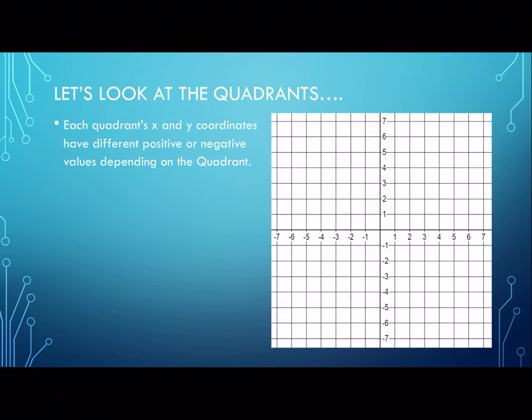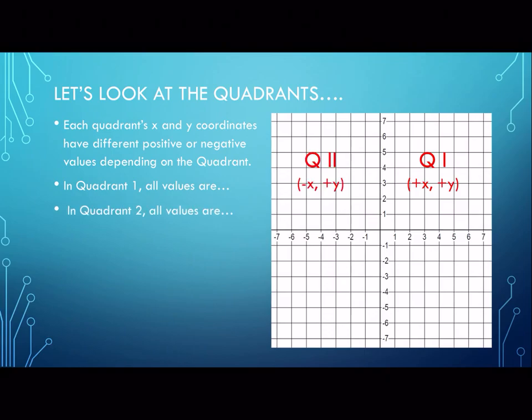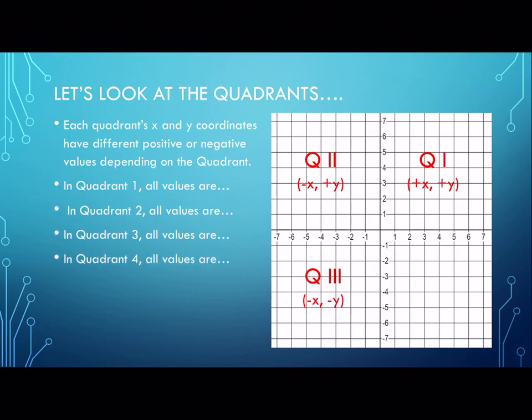Let's look at each quadrant more closely. Each quadrant has its own x and y coordinate signs. In quadrant one, both x and y values are positive. In quadrant two, x values are negative and y values are positive. In quadrant three, both x and y values are negative. In quadrant four, x values are positive and y values are negative.